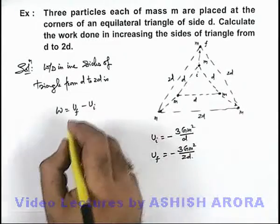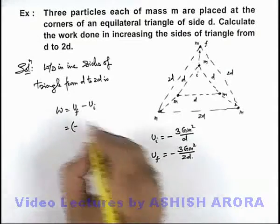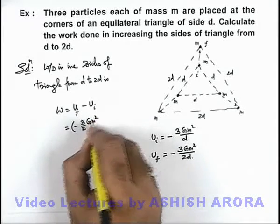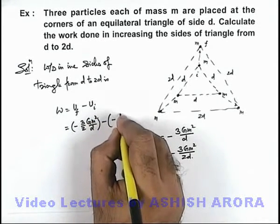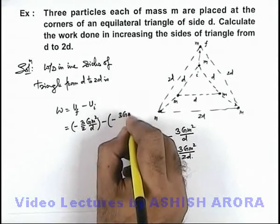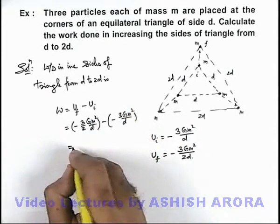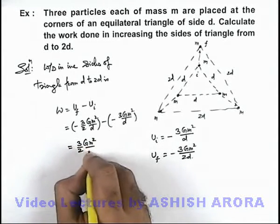If we substitute the values over here, this will give us minus final energy is 3 by 2 Gm² by d, minus of minus 3Gm² by d. We just solve it, finally we are getting the result to be 3 by 2 Gm² by d.